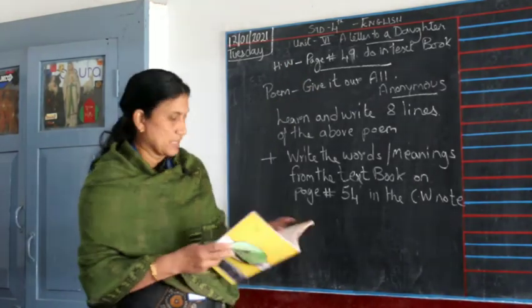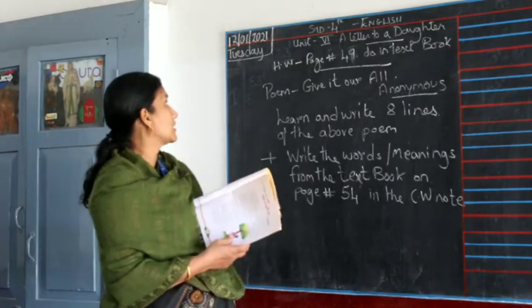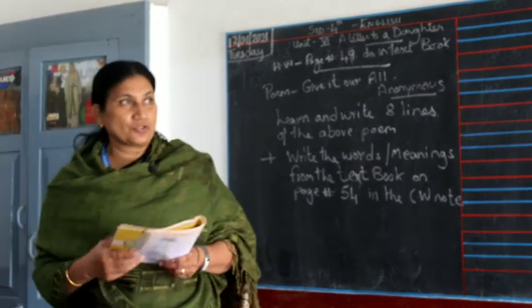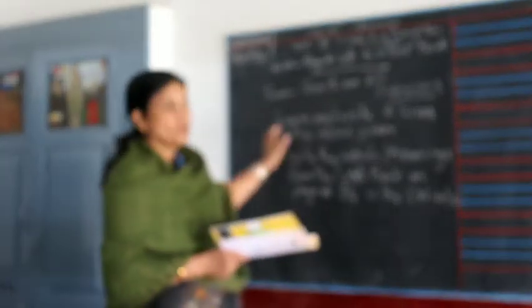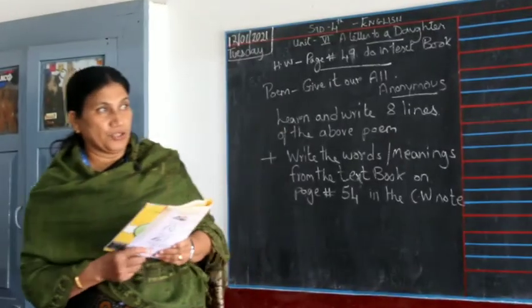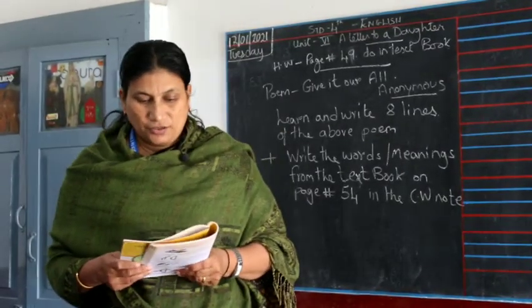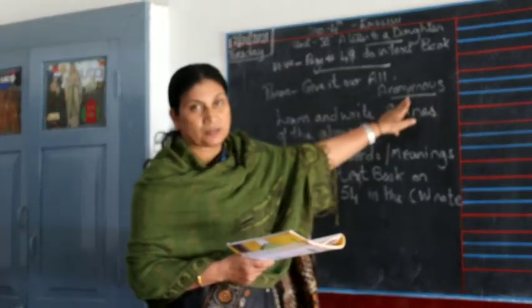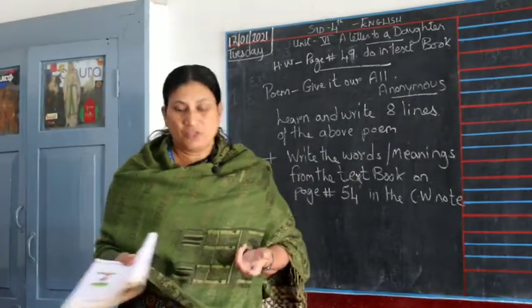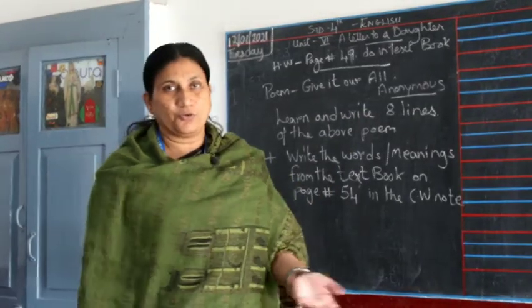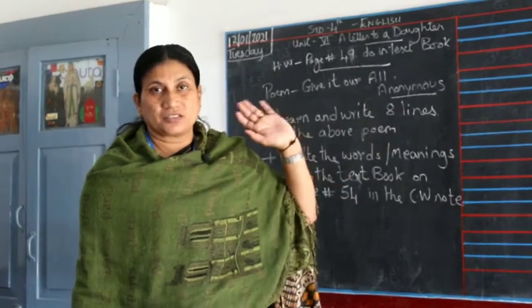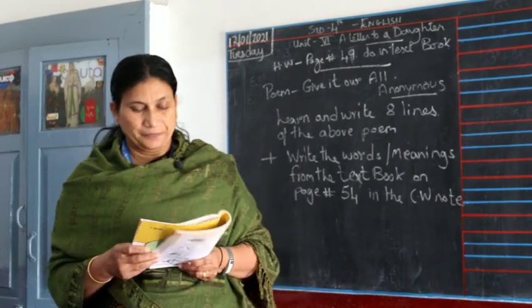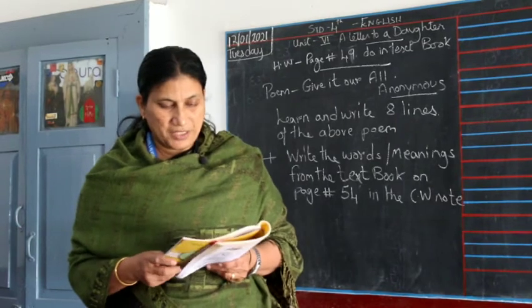Next, the same lesson number six also has a poem. I'll read out the poem to you and then you'll do whatever homework is given. I'll explain it to you. The poem is titled 'Give It Our All' by Anonymous — anonymous means we don't know who the poet is. Here it goes: 'Let's never give in to complaints nor fear, with our eyes on our goals the right direction we steer.'